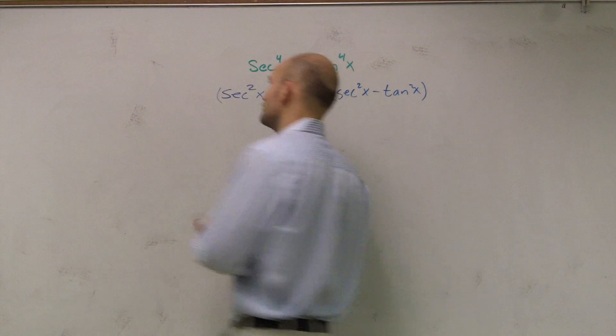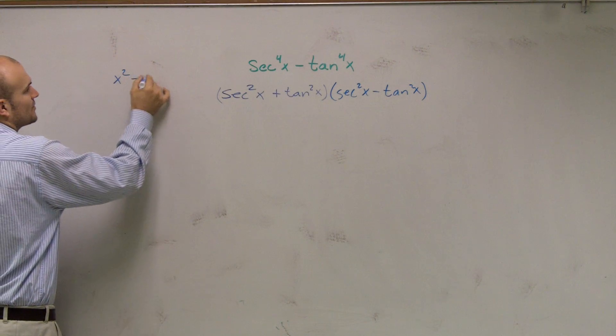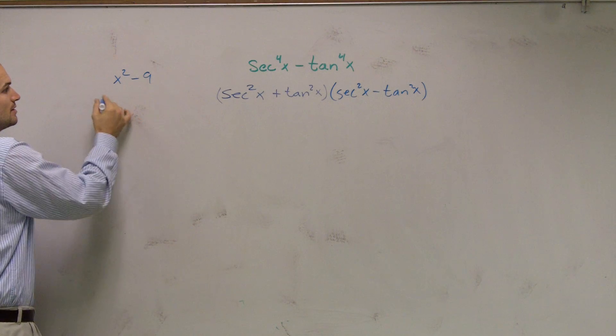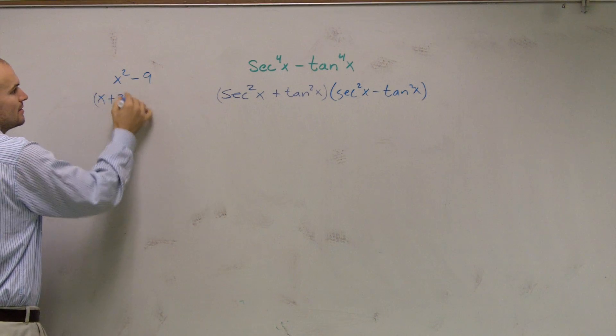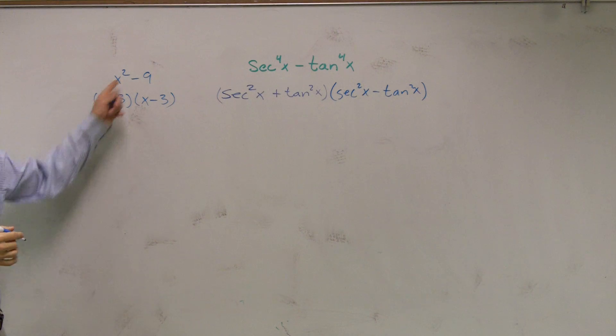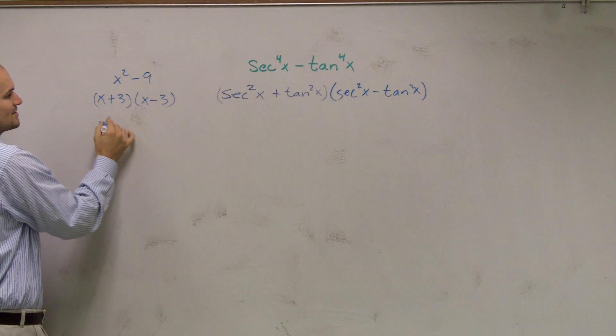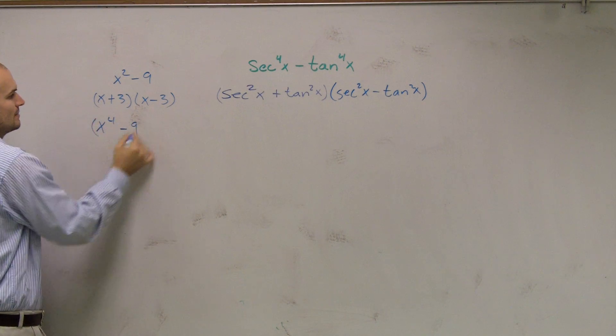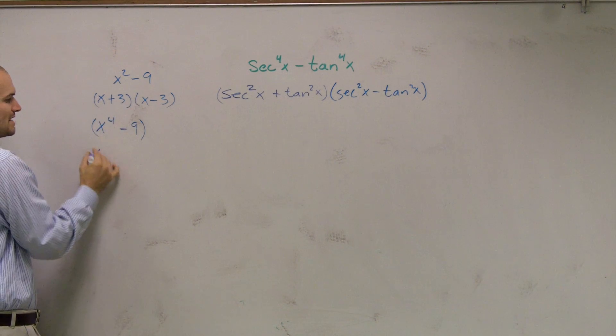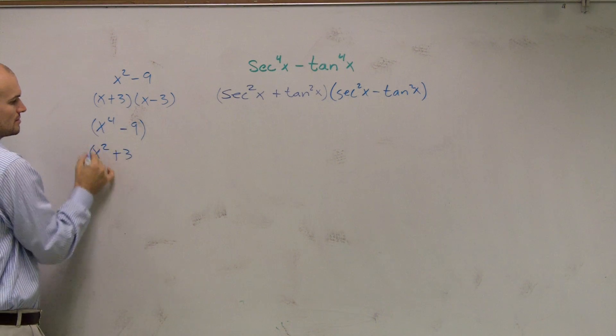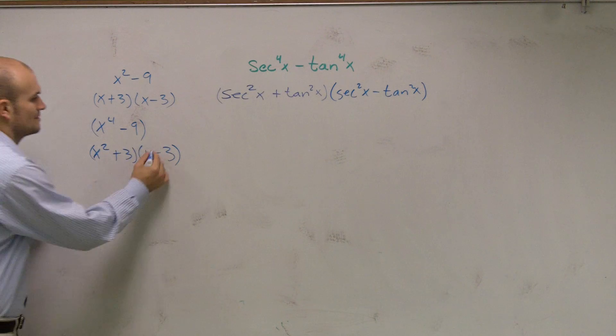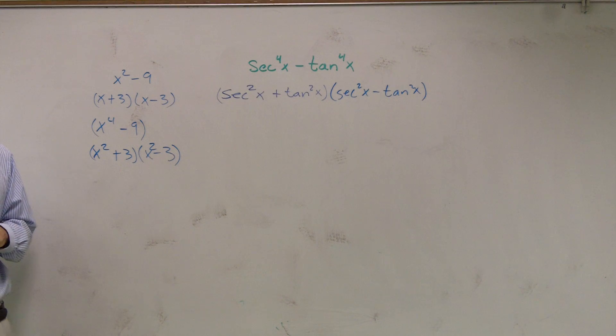And if you want me just to remind you of where I got this, remember if we had something like x squared minus 9, that's a square number, and that's a square number. So you get x plus 3 times x minus 3. And the only difference we have here is instead of using a square, we have x to the fourth minus 9. Well, that's the same thing. Now, instead of just using x's, you would use x squared. So don't let that be the confusing part. So if you have to the fourth, you're just going to use x squared. Make sense?